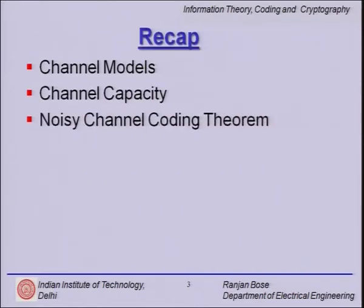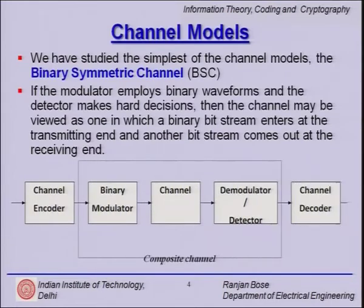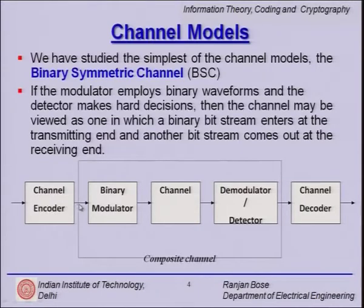In the previous class we started with a very basic channel model called the binary symmetric channel. Even though it is simple, we can have several practical channels represented as a binary symmetric channel, including for example the satellite channel. We always have a channel encoder whose job is to add redundancy in a known manner so as to overcome the ill effects of the channel. Then we have a modulator — in this case a binary modulator, but it could be a general M-ary modulator.